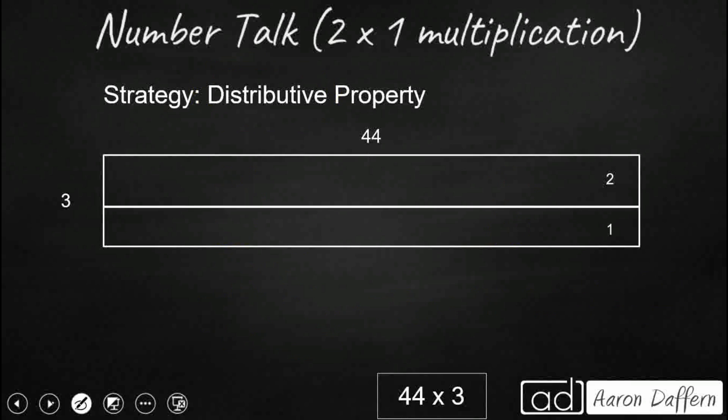Another way we can do it, also using the distributive property, is to break apart that 3 because doubling is really easy. We'll take our 44 times 3 and say instead it's 44 times, let's take that 3 and make it 2 plus 1.